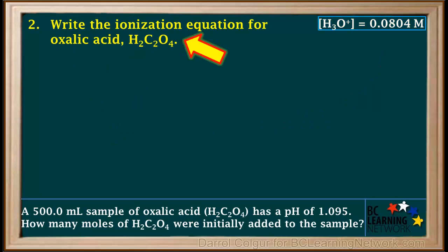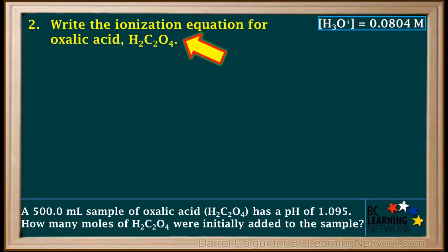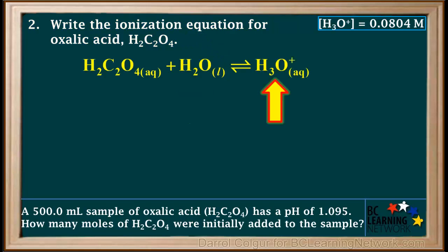In step two, we write out the ionization equation for oxalic acid. We add H2C2O4 to water, and it forms H3O+ and the conjugate base of oxalic acid, the hydrogen oxalate ion, HC2O4-.